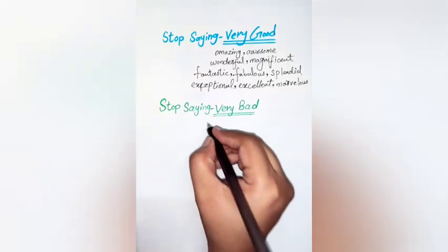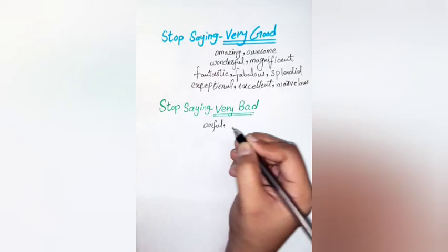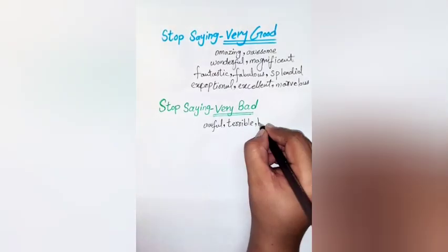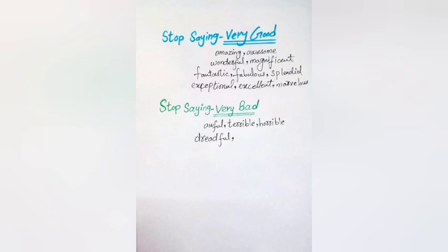Stop saying 'very bad.' Just like 'very good' can sound dull, so does its contrary 'very bad.' Instead of saying 'very bad,' we could say: awful, terrible, horrible, or dreadful. For example: this room smells awful — it smells really, really bad. I have a terrible headache. That was a dreadful experience — it means it was extremely bad and unpleasant.